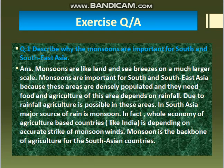Question number one: Describe why the monsoons are important for South and Southeast Asia. Monsoons are seasonal winds occurring in July and August for South and Southeast Asia. They are like land and sea breezes but on a much larger scale, blowing from the sea side or land side. These winds are also seasonal.